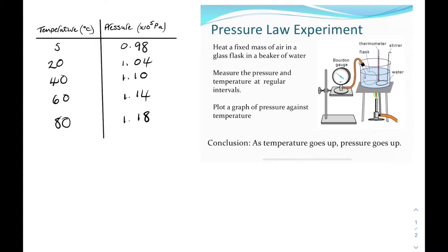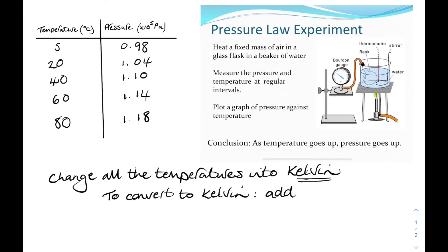So if we want to establish the relationship between pressure and temperature, we need to have all of our temperatures in Kelvin. And to do that, to convert your temperatures to Kelvin from Celsius, you simply add 273.